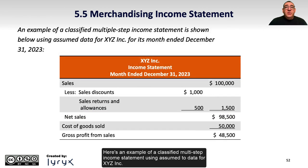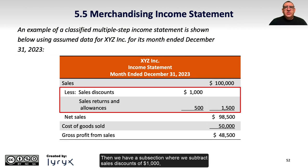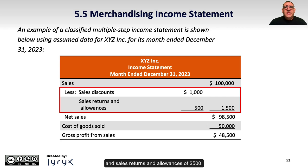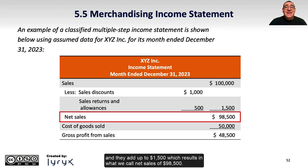Here's an example of a Classified Multi-Step Income Statement using assumed data for XYZ Inc. for its month ended December 31, 2023. We start with sales of $100,000. Then we subtract sales discounts of $1,000 and sales returns and allowances of $500. These are contra-revenue accounts because they have the opposite impact on revenues, and they add up to $1,500, resulting in net sales of $98,500.